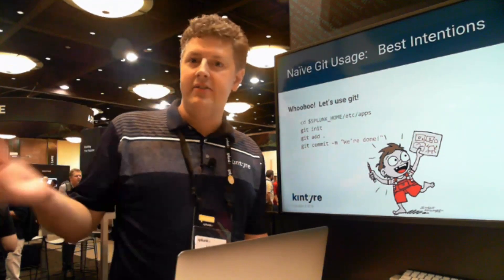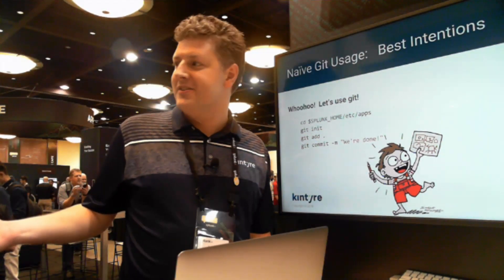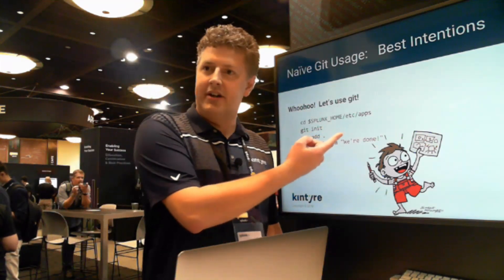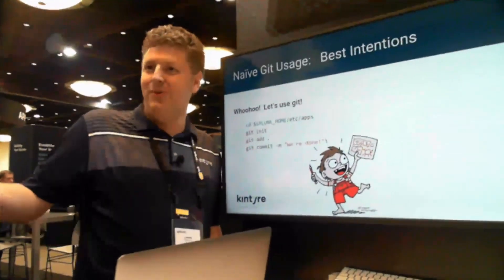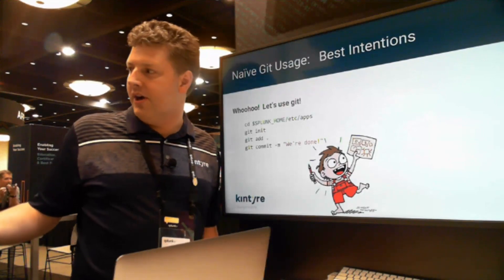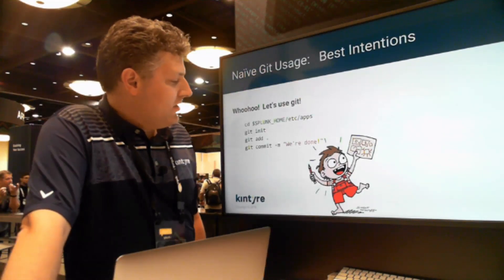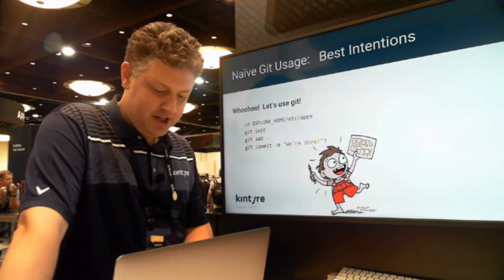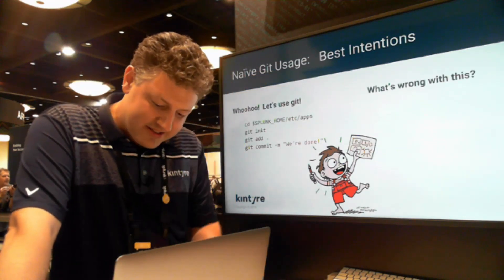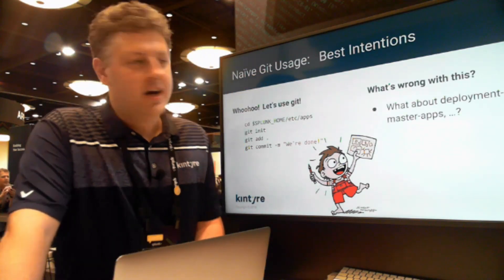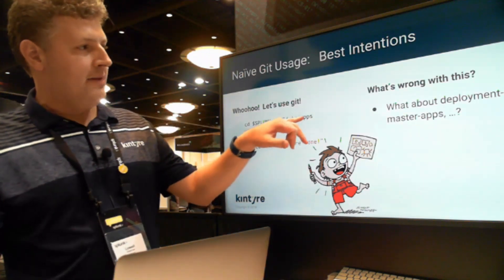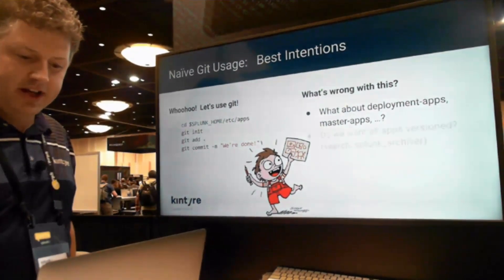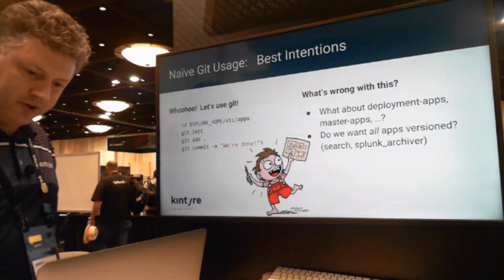So, let's use Git — it's going to be great, right? What often happens is you do things like: let's just grab the apps folder and pull the whole thing into a Git repository. The question becomes: is it really that simple? The answer is probably not. For example, if we're only grabbing the apps folder, what about deployment apps? We're not necessarily going to be capturing that, or master apps, and so on.